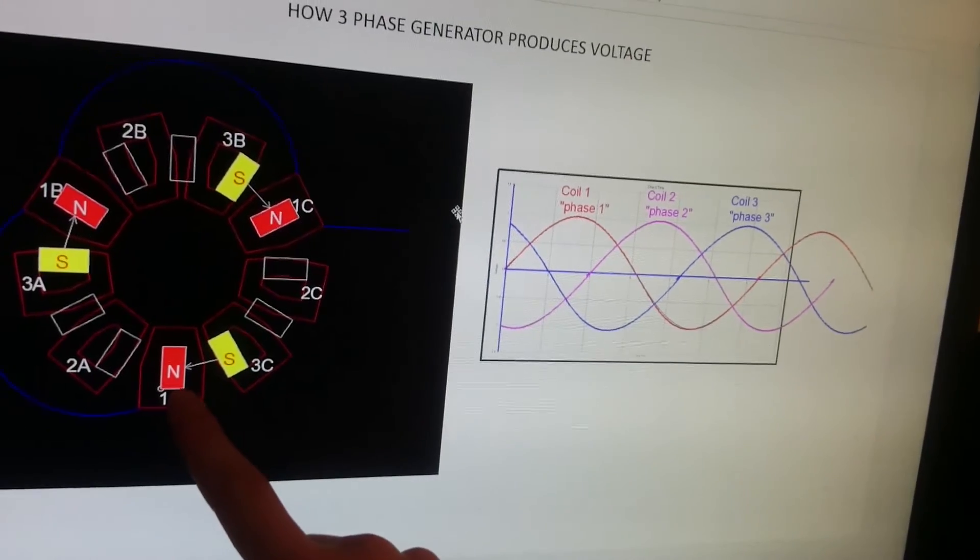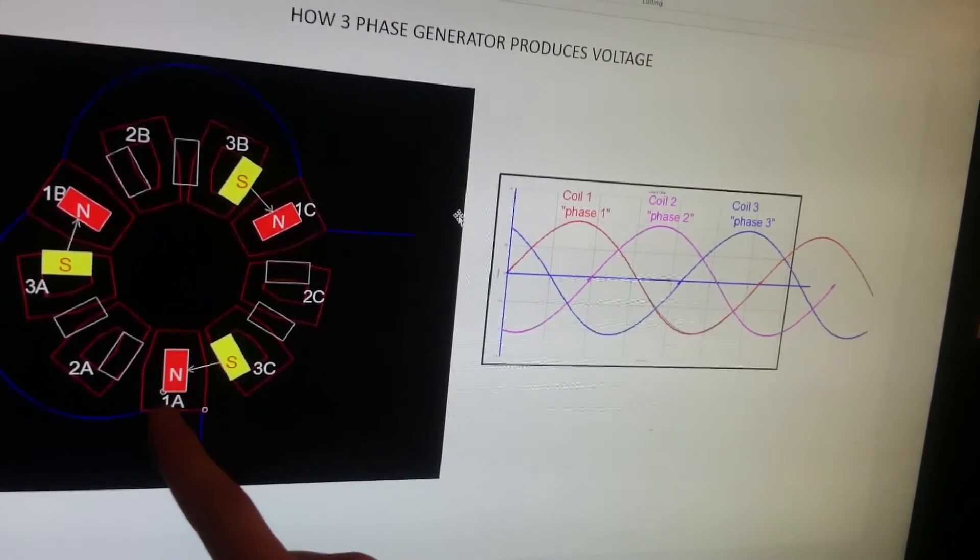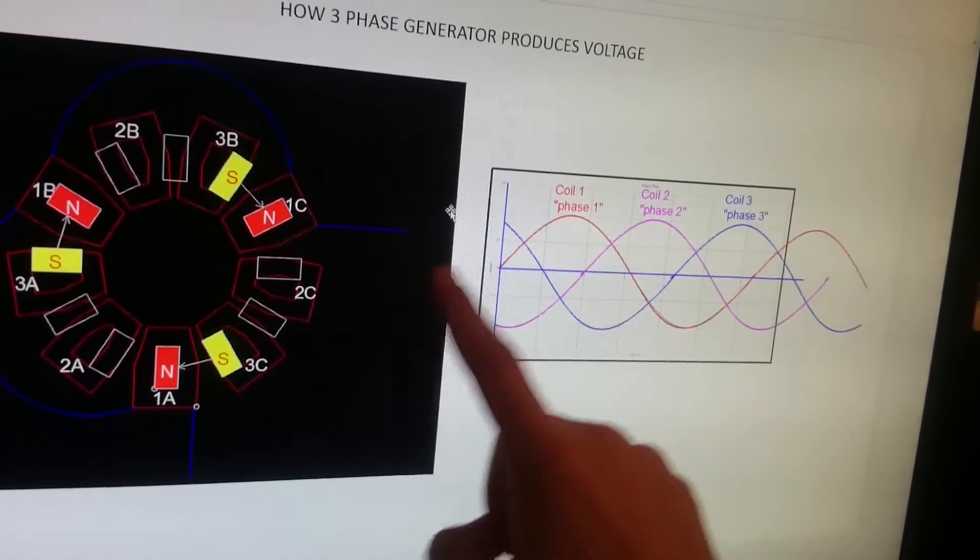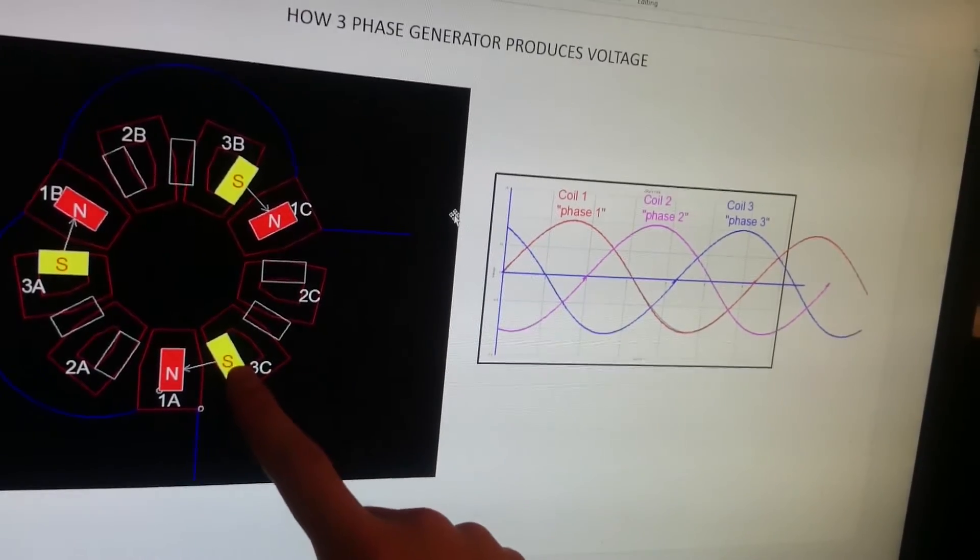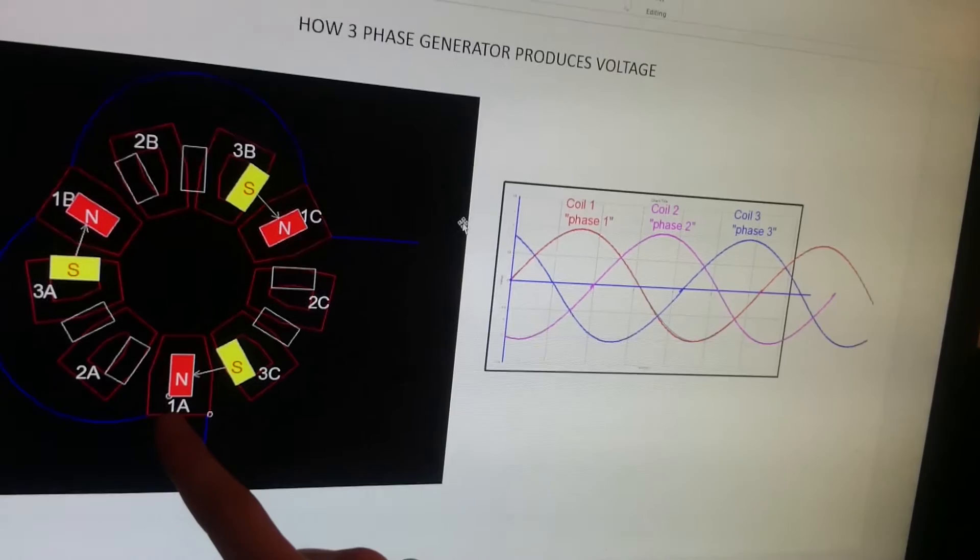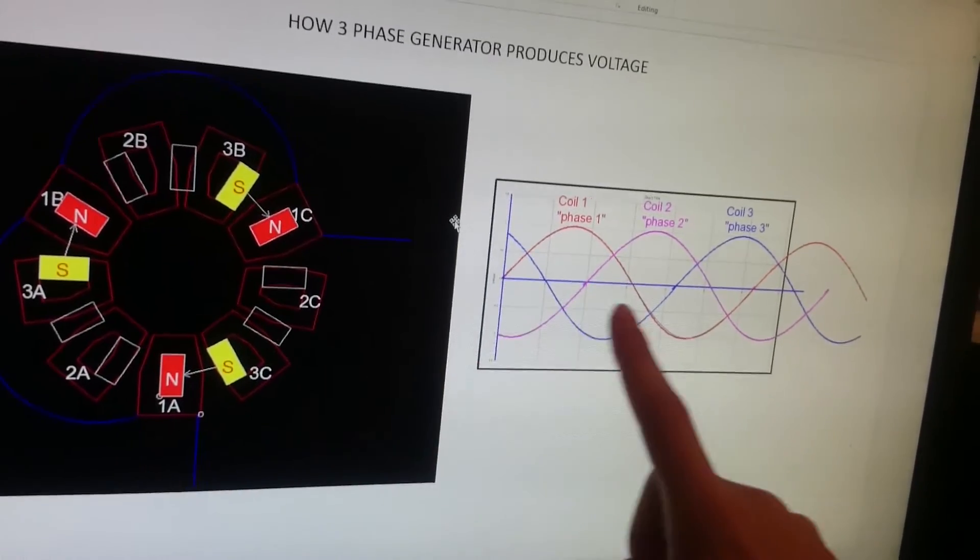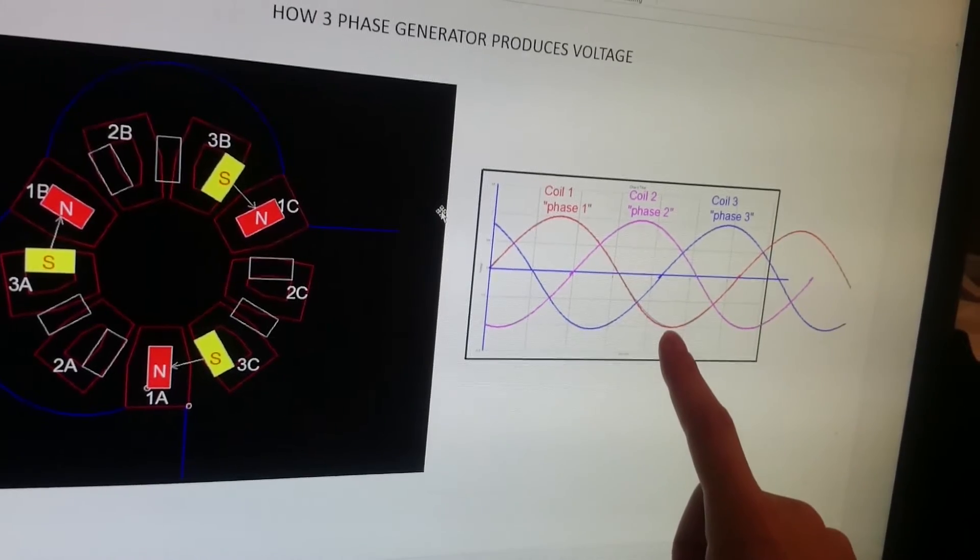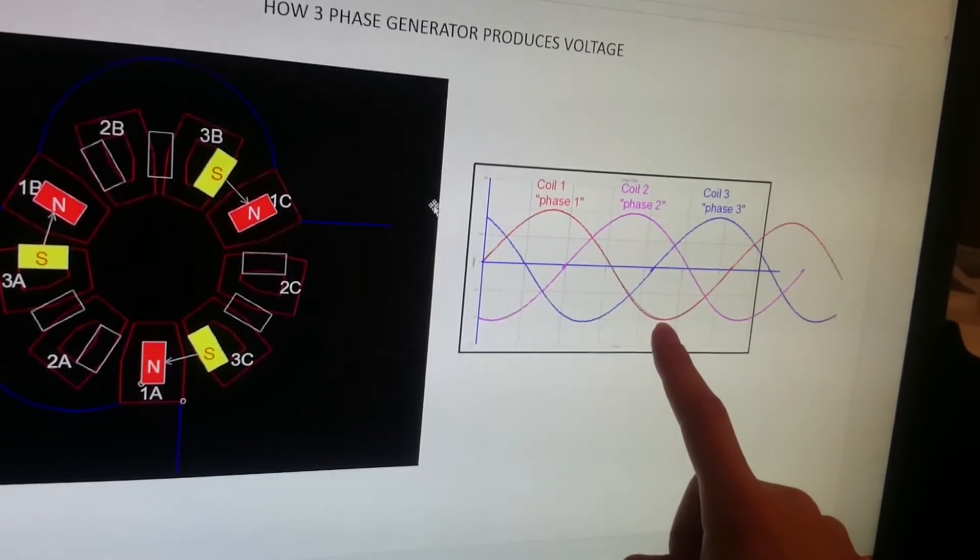When the north-facing pole crosses above coil 1A, we have plus 24 volts. When the south-facing pole crosses above coil 1A, we have minus 24 volts. This is the whole secret.